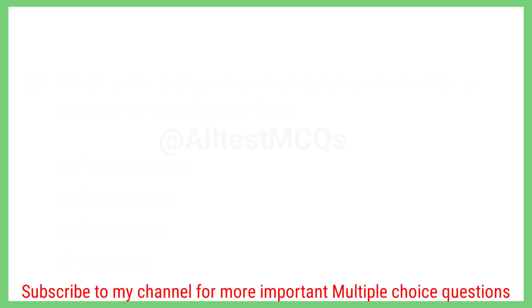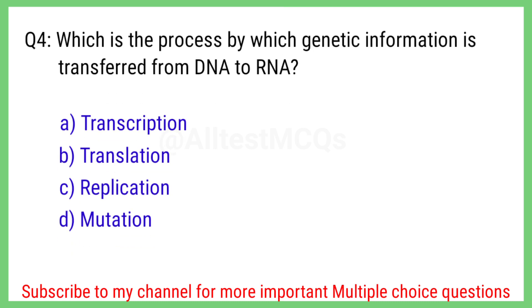Question number 4. Which is the process by which genetic information is transferred from DNA to RNA? The right answer is option A. Transcription.